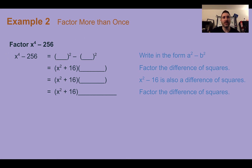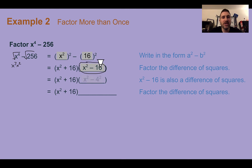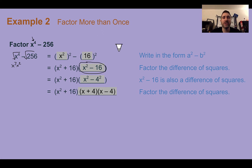Example 2: Factor more than once. Factor x to the fourth minus 256. Taking the square root of both — x to the fourth is x squared times x squared, so that's x squared squared. The square root of 256 is 16. So I end up with x squared plus 16 and x squared minus 16. Well, this second part is also another difference of squares — x squared minus 4 squared — so we can split that apart again into x plus 4 and x minus 4. Sometimes, especially with fourth-power or sixth-power expressions, you may have to factor more than once.